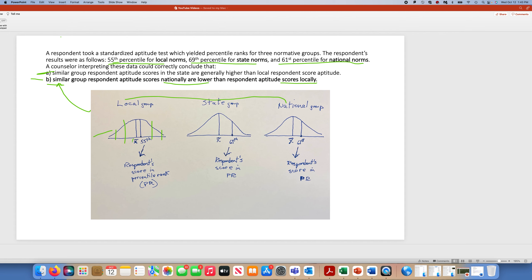From that, we calculate a mean or the average score for that local sample or group, and we know that our student scored in the 55th percentile as compared to that local group. So that's their percentile rank.